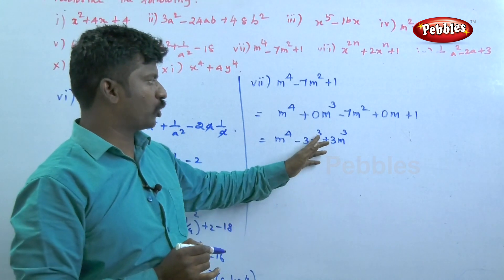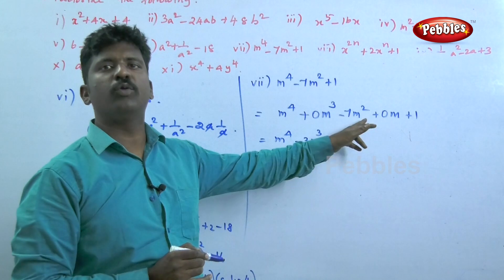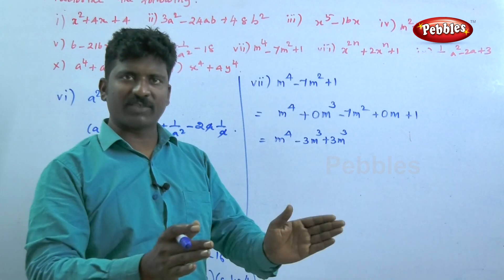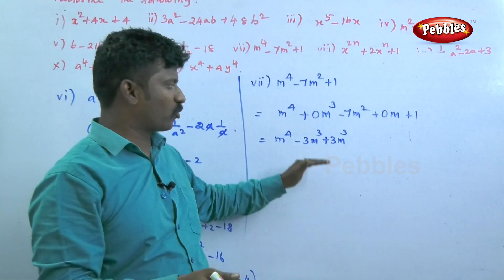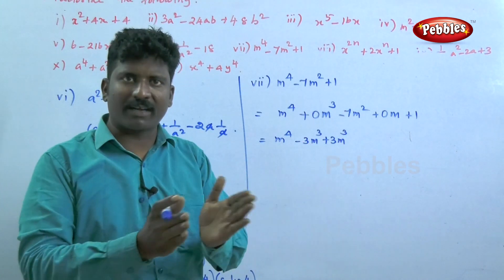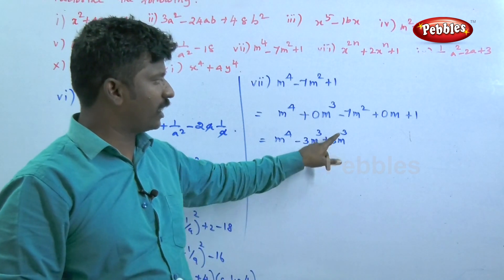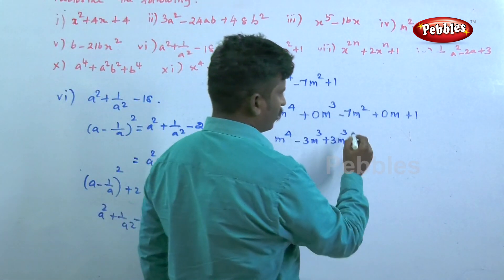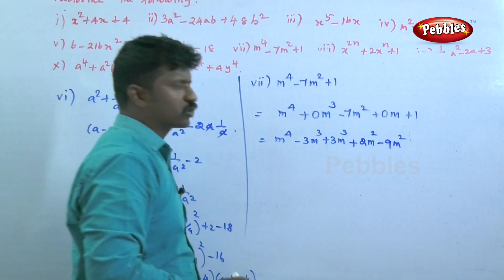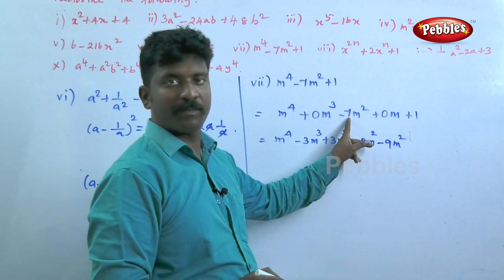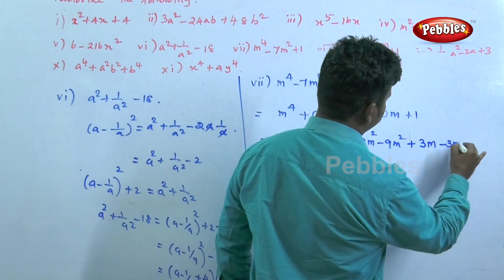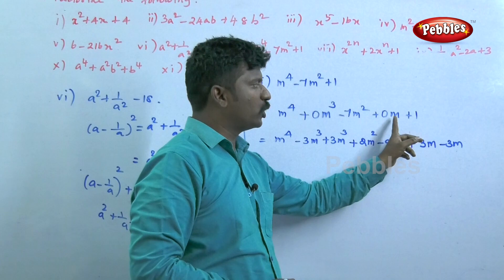For m to the power 4 minus 7m squared plus 1, we try to split the middle term. We consider adding and subtracting 3m cubed and adjusting: minus 3m cubed plus 3m cubed equals zero. For minus 7m squared, we try to split it as 2m squared minus 9m squared. Checking: 2 minus 9 equals minus 7, which is correct.